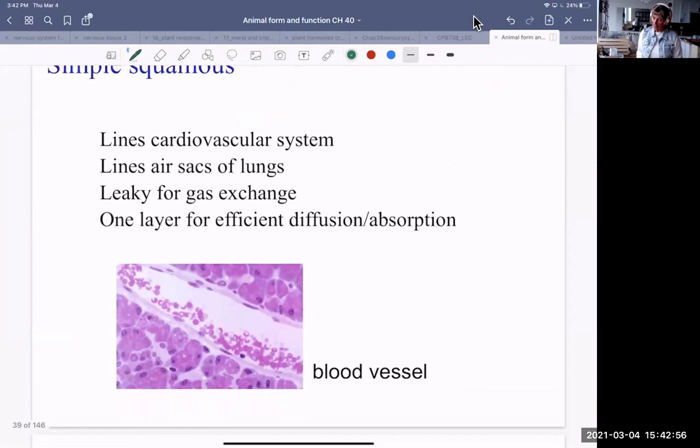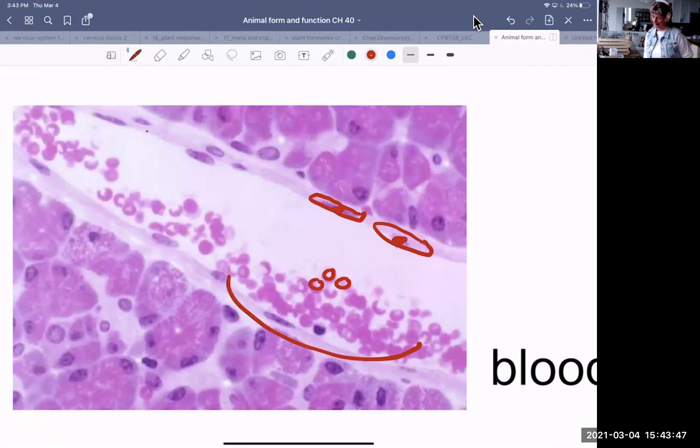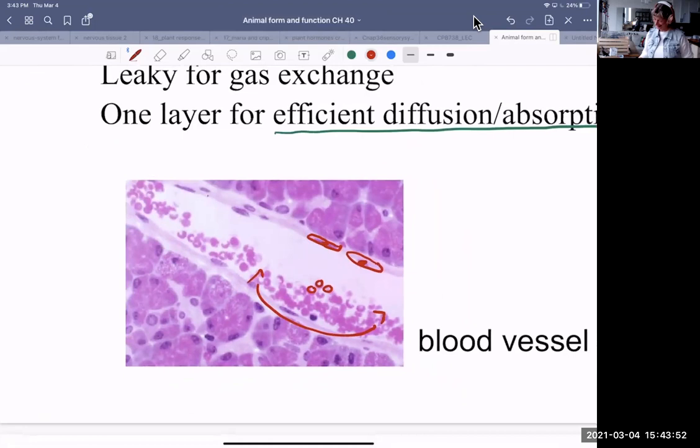So let's look at those a little more closely. Simple squamous lines your entire cardiovascular system and the air sacs of the lungs. And you know what? It's leaky. So they are tightly packed, but there are clefts in between the cells. So they're closely packed together, but they are also somewhat leaky. They're one layer for efficient diffusion and absorption. So here's a blood vessel. Do you recognize these cells here in the center? What are those cells in the blood vessel? Red blood cells. Red blood cells. Good. Yeah. But these skinny cells here on the edge are your simple squamous epithelium. What's the nuclei? Oh, okay. I just, I can't resist doing this. It just called for that. Yeah. So that's a blood vessel.